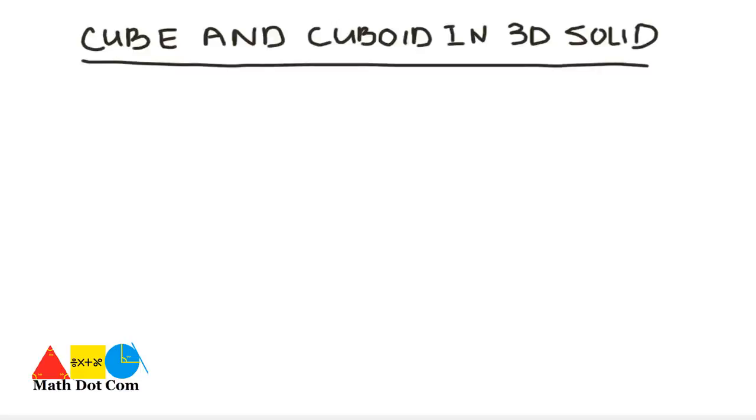Today we will discuss the shapes in 3D solids, that is cube and cuboid. What are the properties of the cube and cuboid and how they differ from each other. We will start from cube by drawing it and discussing its properties.